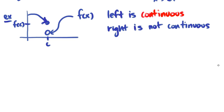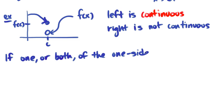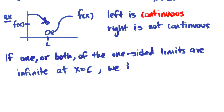Another scenario that can happen is if one or both of the one-sided limits are infinite at x equals c, we have an infinite discontinuity.